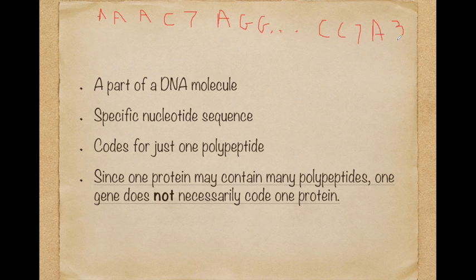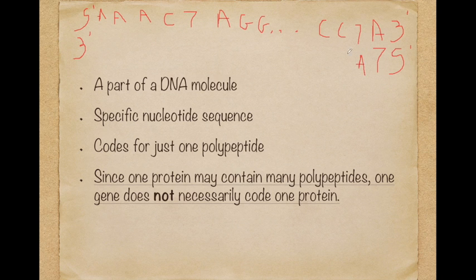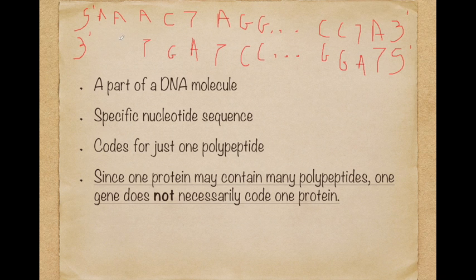Let's say this is the 3' end and this is the 5' end, and we said that they're at opposite ends. Therefore the other chain will have the 3' end here and the 5' end here. Now we have T, A, G, G — the bases are complementary — C, C, T, A, G, and T. This is a sequence I have chosen from a DNA molecule.